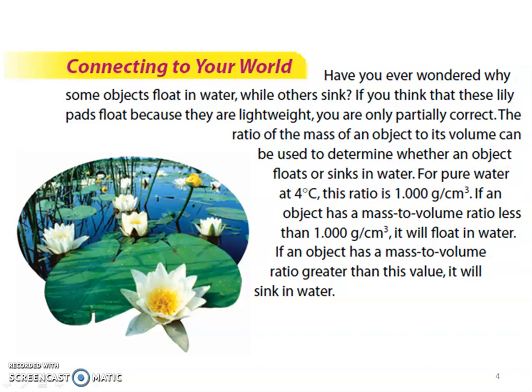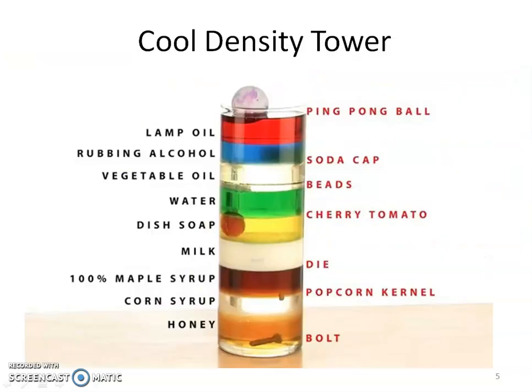If an object has a mass to volume ratio less than 1, then it will float in that water. If an object has a mass to volume ratio greater than this value, it will sink. Density is all about the comparison and if it will float or sink. Just like this density tower - your most dense item is at the very bottom and your least dense item is at the very top. We have the least dense that floats on top of the most dense.